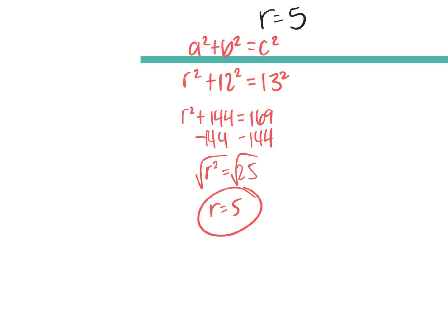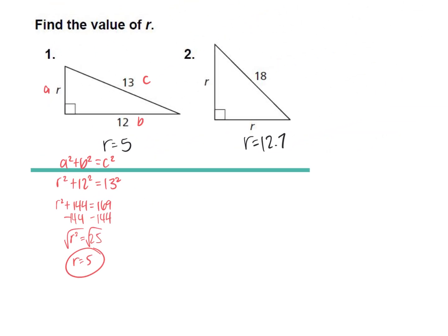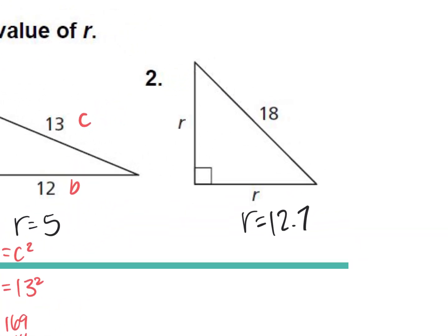Very nicely done. We are changing gears a little bit in this chapter, but this is a very important problem. These right triangles are going to show up again. In this second one, we had two sides that were r, so we can't use the Pythagorean theorem for the second one.